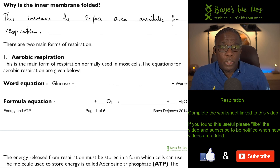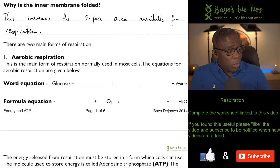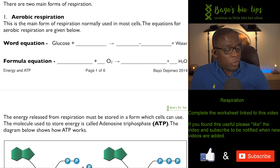Generally speaking, if you get a question at GCSE or A-level where you're asked why a structure is folded in a certain way, it's often to do with increasing the surface area available. Now let's look at the two main forms of respiration — we'll start with aerobic respiration. Aerobic respiration requires oxygen.